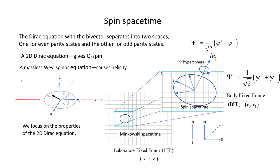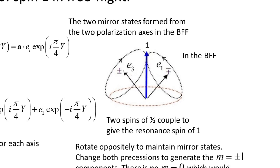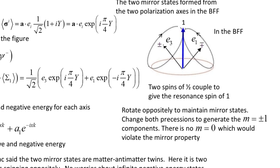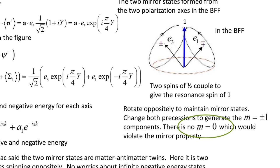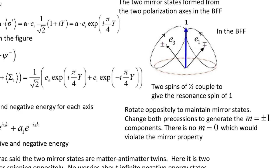Now I can discuss the 2D Dirac equation. The two orthogonal spin axes are mirror states. The two-dimensional polarization plane is the sum of the two mirror states as shown. As mirror states, they must reflect each other, so they are shown precessing oppositely to maintain their reflective property. The two mirror states of one-half spin lie along the E3 and the E1 axes, and these couple to give a completely resonant spin of magnitude 1. This is like a photon. Even more so, there is no zero component for this spin. The two axes, spinning oppositely, generate a spin component of M equals plus 1. Reversing both gives the component of M equals minus 1. But to form the M equals zero component would violate the mirror property, so it cannot form. Note that a photon has no M equals zero component either.